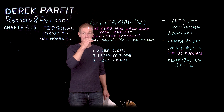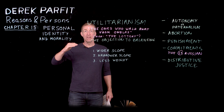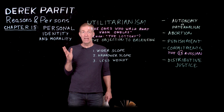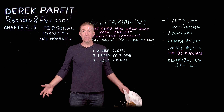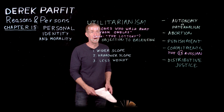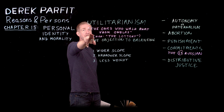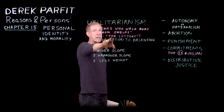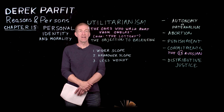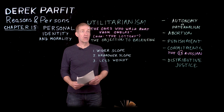Classic objections to utilitarianism are that this can lead to sacrificing the one for the good of the many. That might remind you of Star Trek II: The Wrath of Khan, where Spock sacrifices himself and says the needs of the many outweigh the needs of the few. Being a good Vulcan, he's a utilitarian — he's saying what happens to me is outweighed by the good to the others.